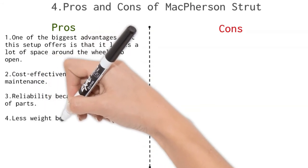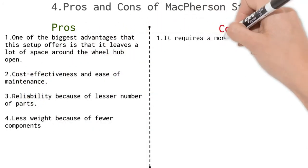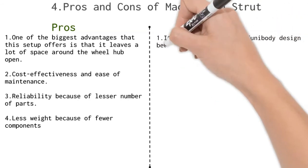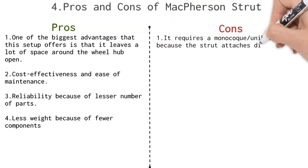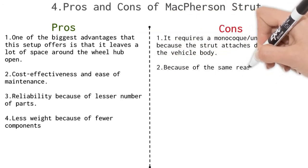It requires a monocoque unibody design because the strut attaches directly to the vehicle body. Because of the same reason, it is not fast around the corners. It is not used in off-road vehicles because of limited movement of strut.